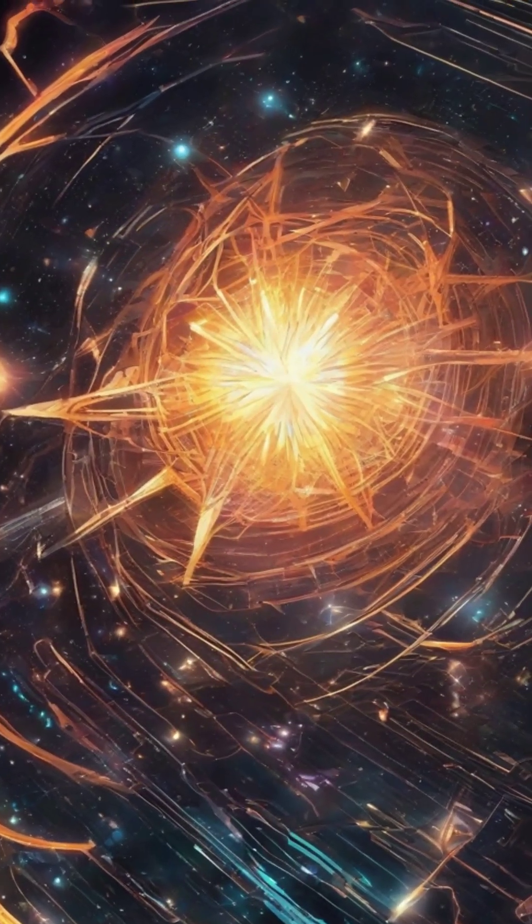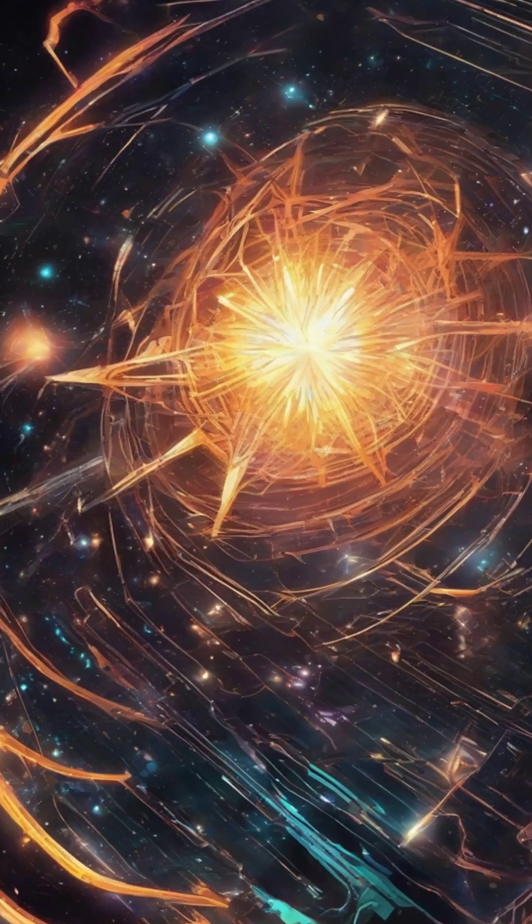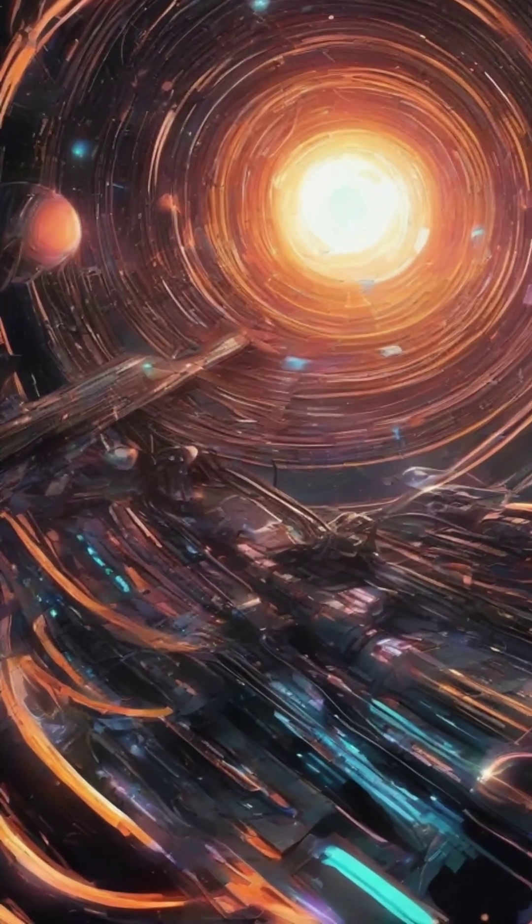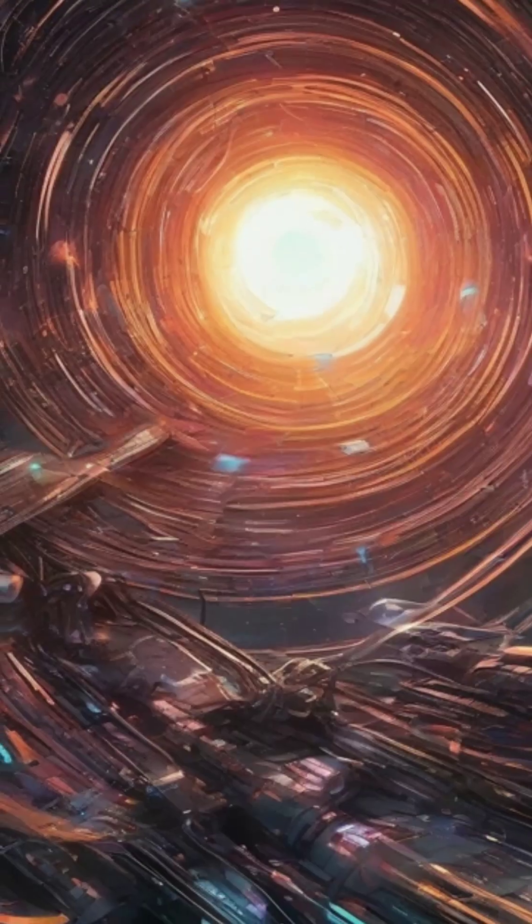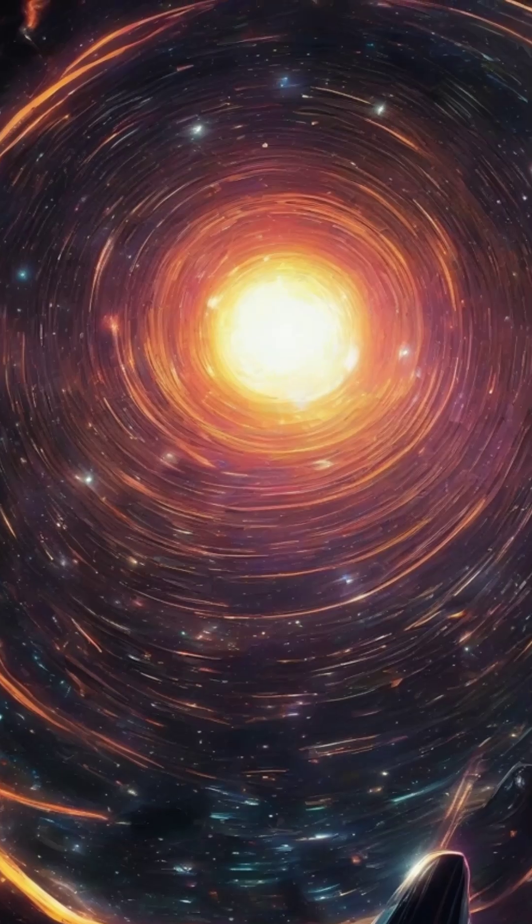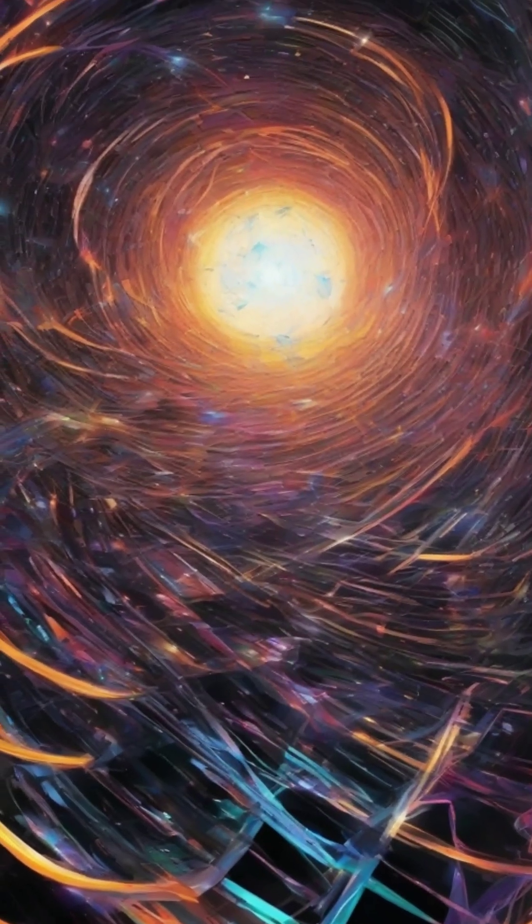A black hole is what happens when a star dies but doesn't know how to stop collapsing. Its gravity pulls so hard that nothing, not even light, can escape. But it's not just a super heavy object. It's a hole in the fabric of reality itself.